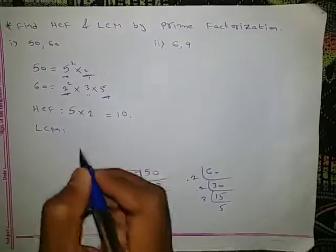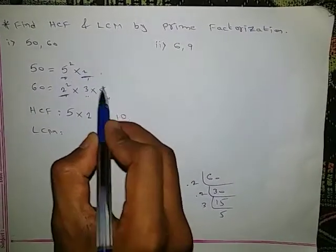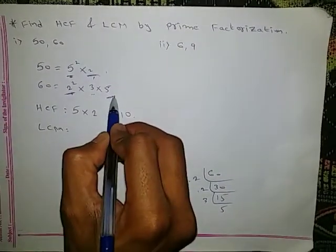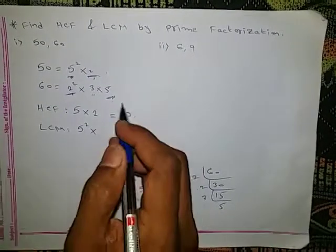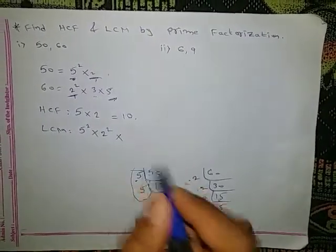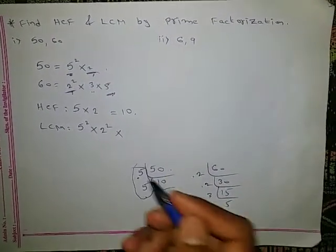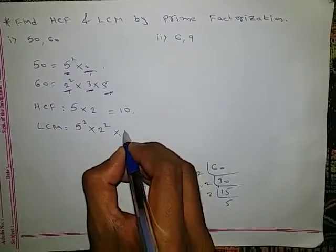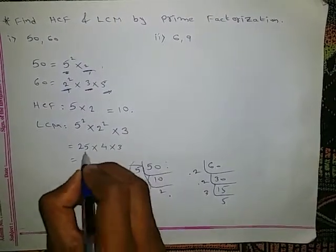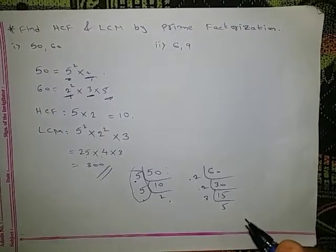What about LCM? For LCM, first check the common numbers: 5² and 5, and 2 and 2². For common factors, take the greater one. 5² is greater, and 2² is greater. After finishing the common numbers, write the extra numbers also. Here 3 is extra. So LCM = 5² × 2² × 3 = 25 × 4 × 3 = 25 × 12 = 300. LCM of the given two numbers is 300.